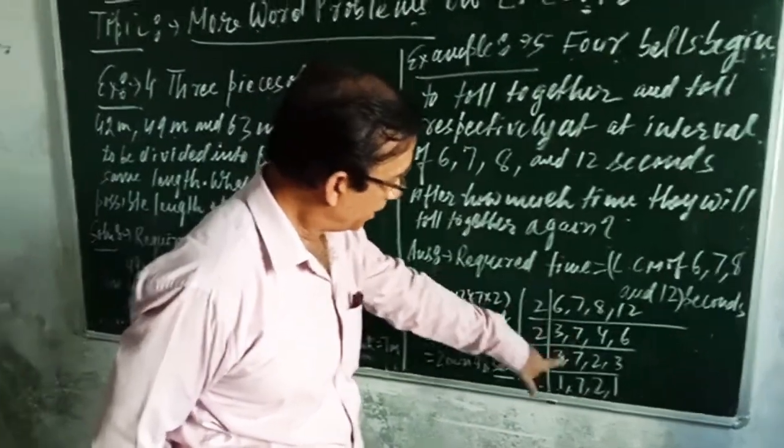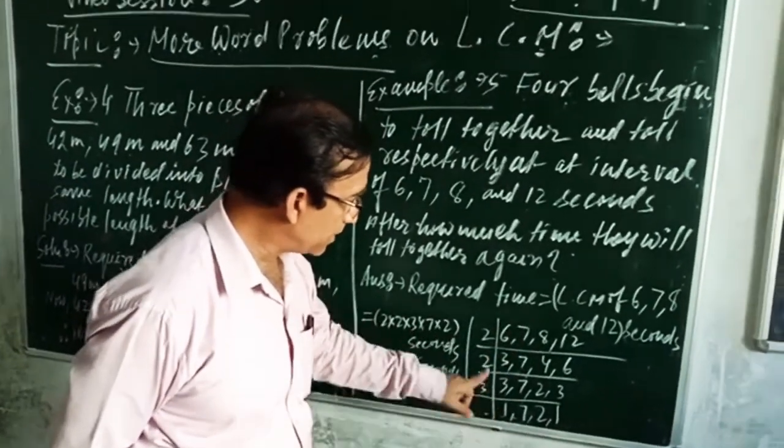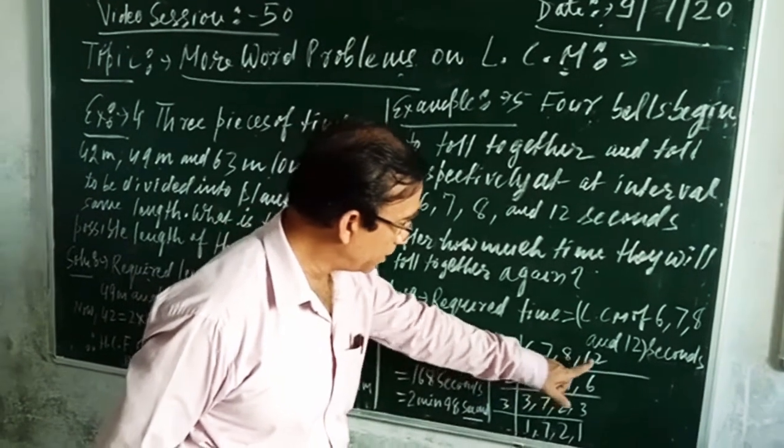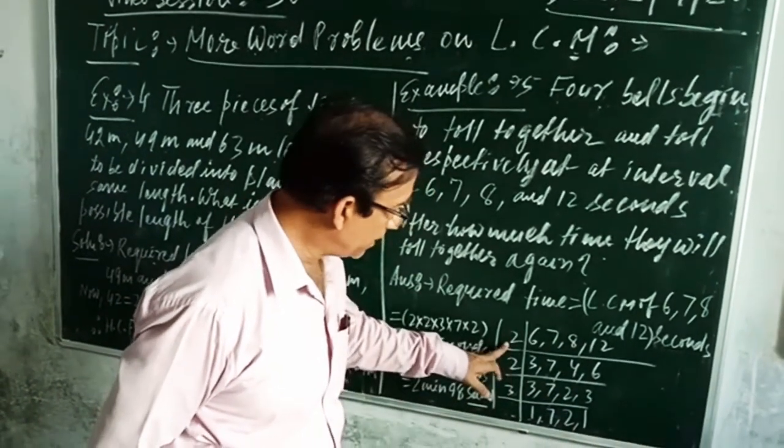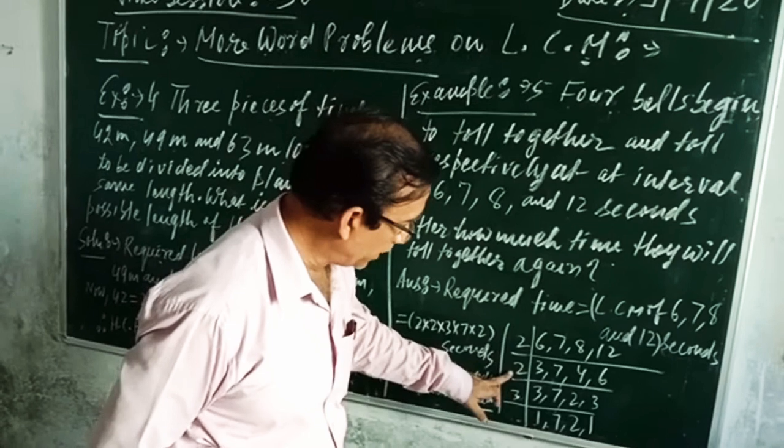Now, by division method, the LCM of 6, 7, 8 and 12 will be: first we will divide it by 2, again by 2, again by 3.